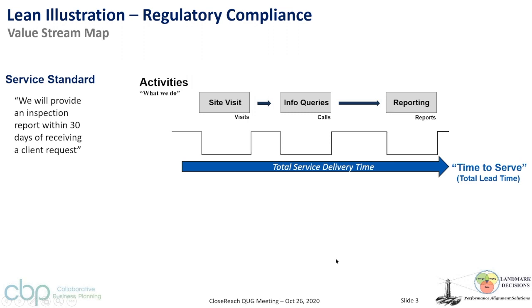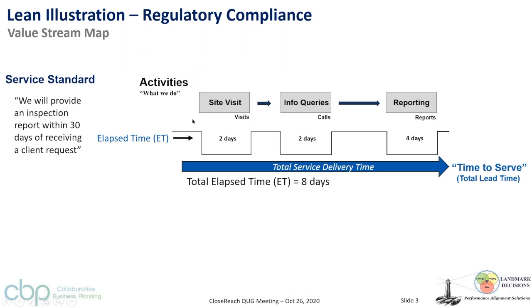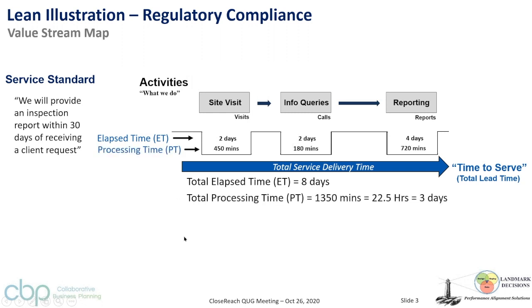From a lean perspective, when doing value stream mapping you look at total service time. Their service standard is 30 days from the time of the call to when the report is delivered. This breaks into elapsed time — the clock time for each activity, like how long a site visit takes to be scheduled and executed, how long to set up the query meetings, and how long to produce the report.